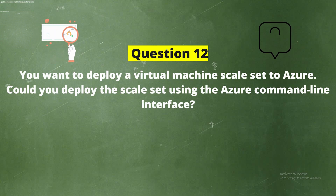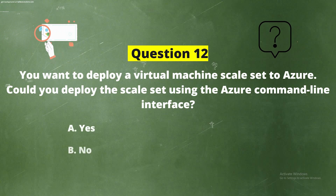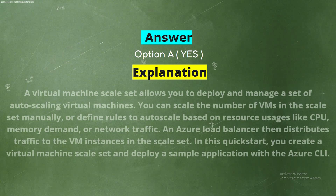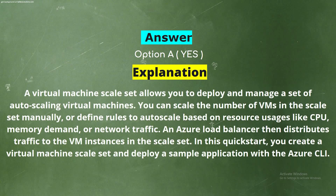Question 12: You want to deploy a Virtual Machine Scale Set to Azure. Could you deploy the scale set using the Azure Command Line Interface? Options: Option A - Yes, Option B - No. The correct answer is Option A - Yes. Explanation: A Virtual Machine Scale Set allows you to deploy and manage a set of auto-scaling virtual machines. You can scale the number of VMs manually or define rules to auto scale based on resource usage like CPU, memory demand, or network traffic. An Azure Load Balancer then distributes traffic to the VM instances in the scale set.